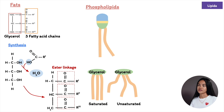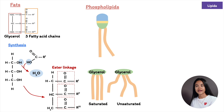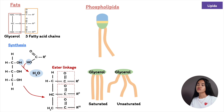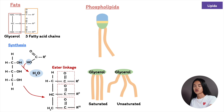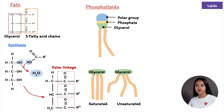The next type of lipids are phospholipids, which are major components of cell membranes. They are similar to fats, but instead of three fatty acids attached to glycerol, only two fatty acids are attached. The third hydroxyl group of glycerol is linked to a phosphate group, which has a negative electrical charge. Sometimes small polar molecules such as choline are also linked to the phosphate group.